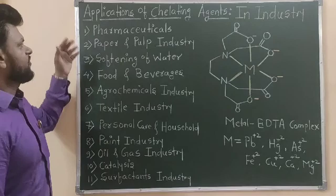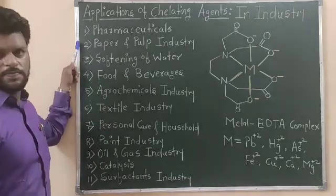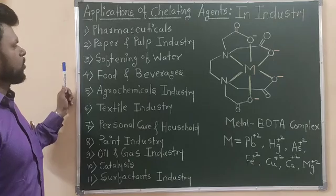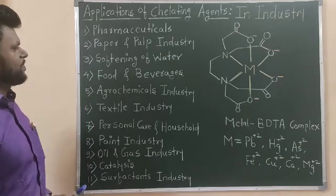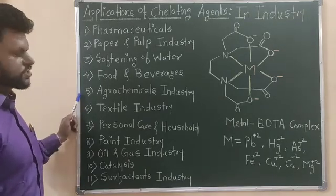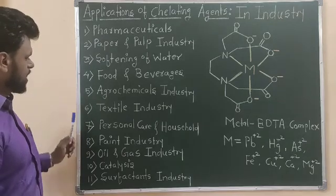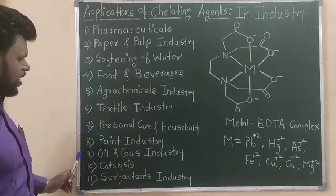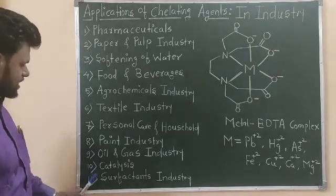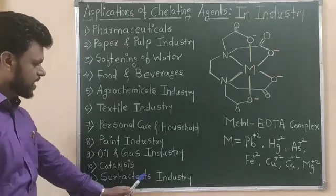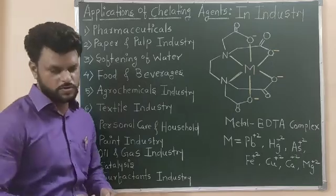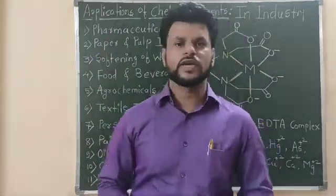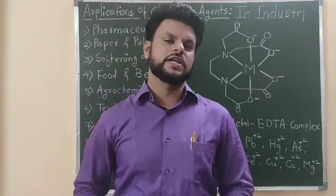We have pharmaceuticals, paper and pulp industry, softening of the water, food and beverages, agrochemical industry, textile industry, personal care and health food, paint industry, oil and gas industry, catalysis and surfactant industry, and many more. Let's look at the first point — how we can use this chelating agent in the pharma industry. I would like to share one incident which happened in Japan.